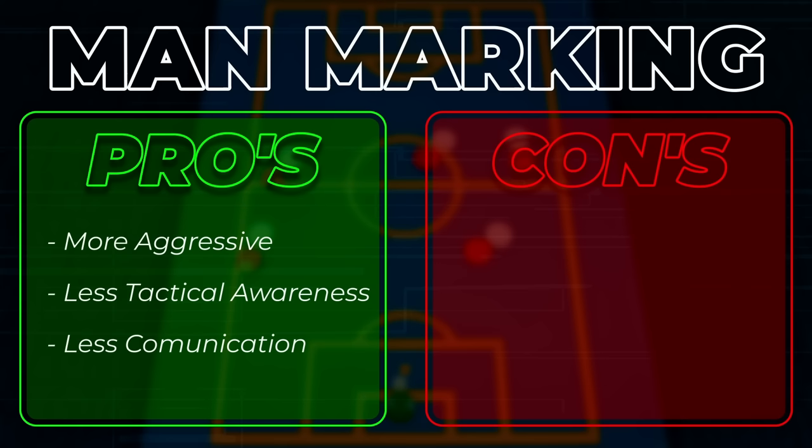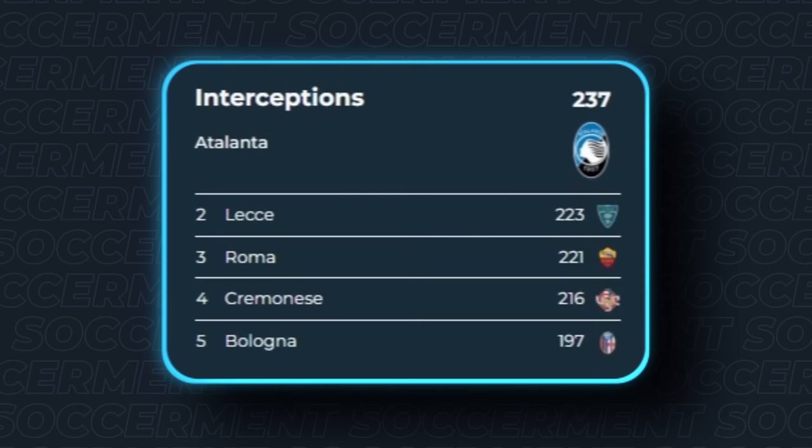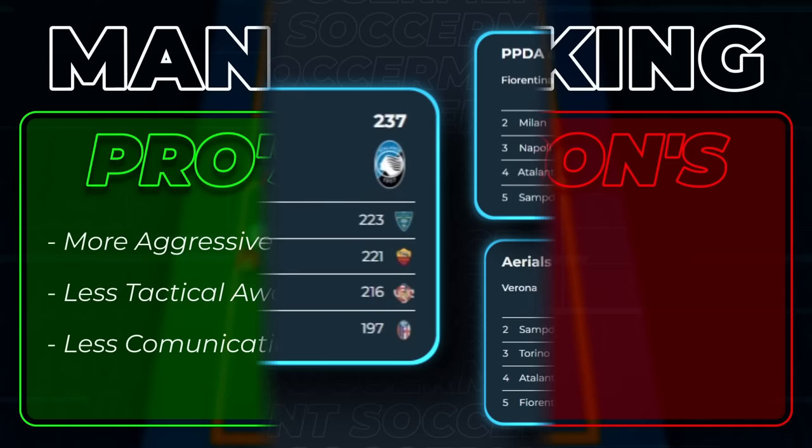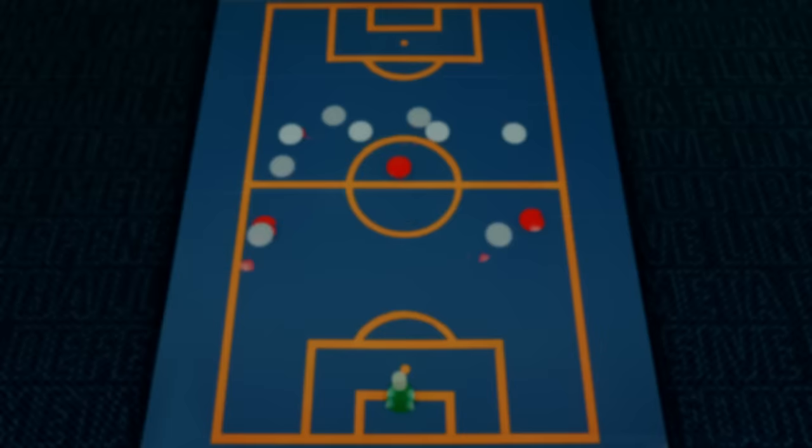The pros of man-marking are the inherently aggressive nature of the team, instantly ready to put pressure on the opposition. This is reflected in the statistics, with Atalanta ranking first in Serie A for interceptions, while also ranking in the top five for passes per defensive action and aerial duels won. On the other hand, the risks are the amount of responsibility placed on each player — all it takes is one defender to lose track of their man and the team can instantly be outnumbered, causing a domino effect on the rest of the team.